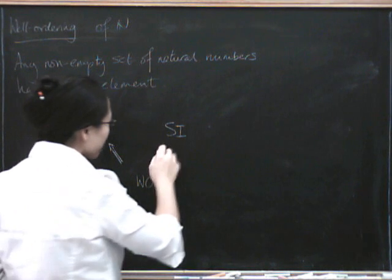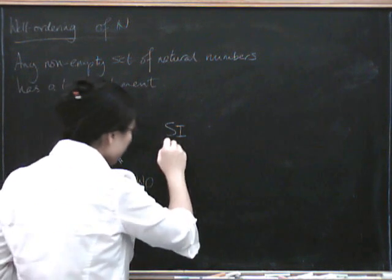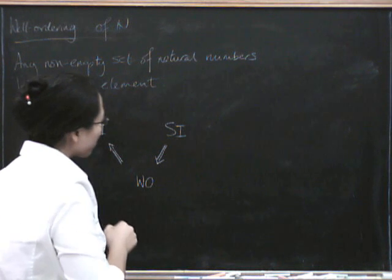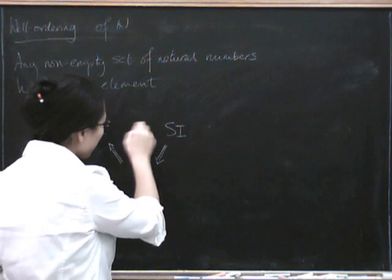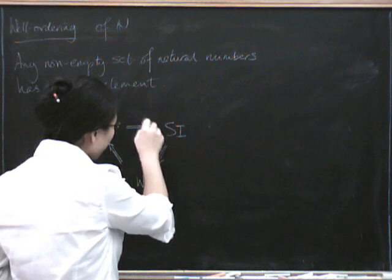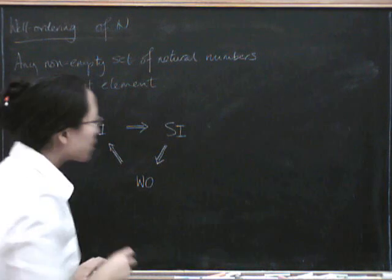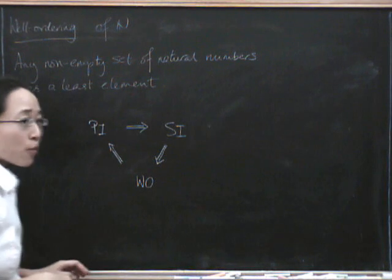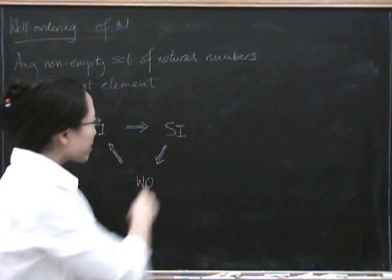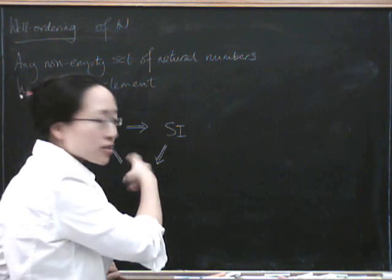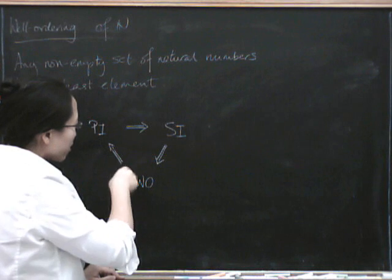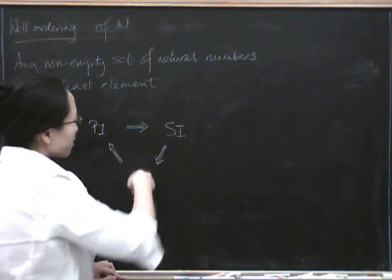The clearest way of doing that is to show that the principle of strong induction implies well-ordering, and that the principle of induction implies the principle of strong induction. This is one very classic way of showing that three things are equivalent by going around in a circle, rather than showing that these two are equivalent and those are equivalent.